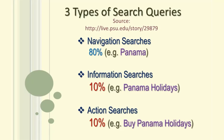Notice the differences. When a visitor types in 'Panama', she is not sure what to expect from the results. However, if she types in 'Panama holidays', she is narrowing down her search. At this stage, she can be said to be interested in buying Panama holidays, but perhaps she just wants to gather information.